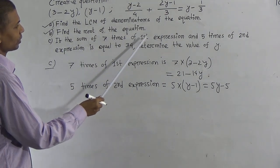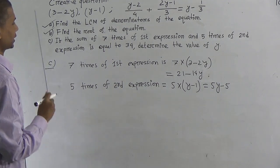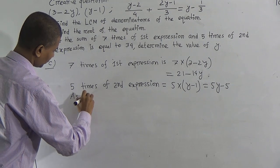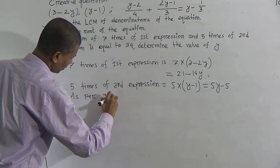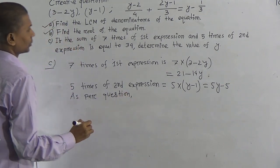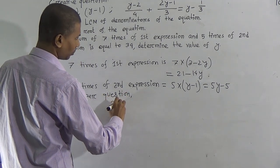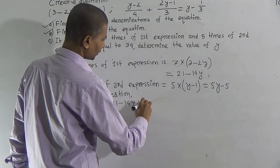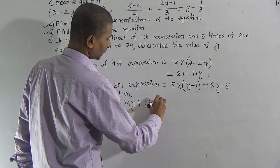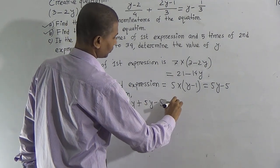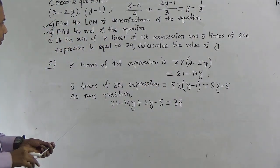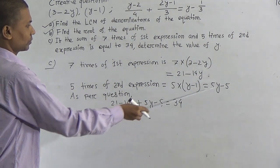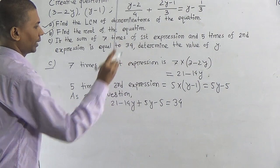The question states: if the sum of 7 times of the first expression and 5 times of the second expression equals 34. So we write the equation: 7 threes are 21, 7 times 2y is 14y, so we get 21 minus 14y. Then 5 into y equals 5y, and 5 into 1 equals minus 5.